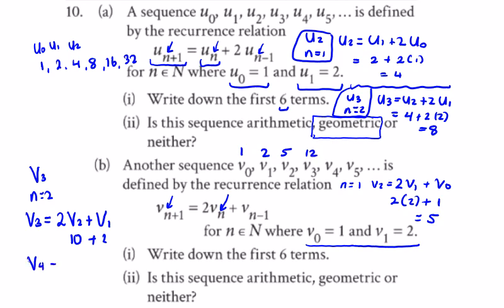V4, you can see here, it's going to be twice v3 plus v2. And twice v3 is 24 plus v2, which is 5. So that's going to give 29. And then v5 for the 6 terms. V5 is going to be twice v4 plus v3, based on the pattern. And twice v4, 2 times 29 is 58 plus v3, which is 12. So that's going to give 70. It doesn't look like there's any relationship between these. There's no common ratio and there's no common difference. So this looks to me to be neither.